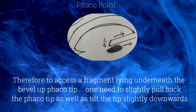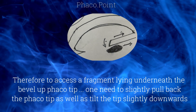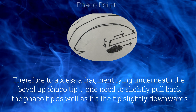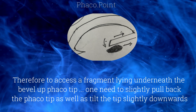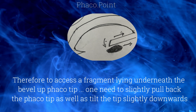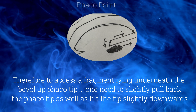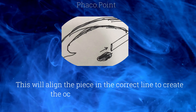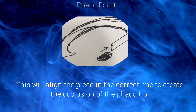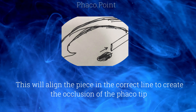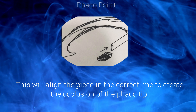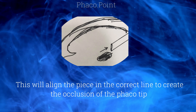Therefore, in order to access a fragment lying underneath the bevel-up FACO tip, one needs to slightly pull back the FACO tip as well as tilt the tip downwards. This will align the piece in the correct line to create occlusion of the FACO tip and help you to proceed with FACO.